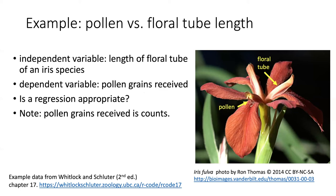In this case, regression as a statistical test would be the correct thing to do, because we believe that the length of the floral tube is the cause of the effect of the number of pollen grains being received on the stigma.